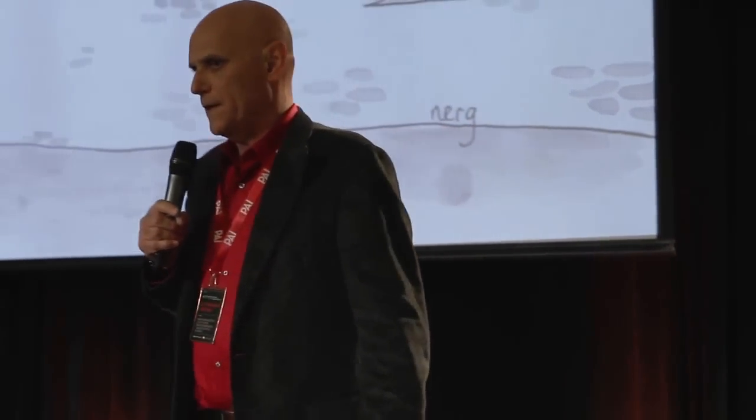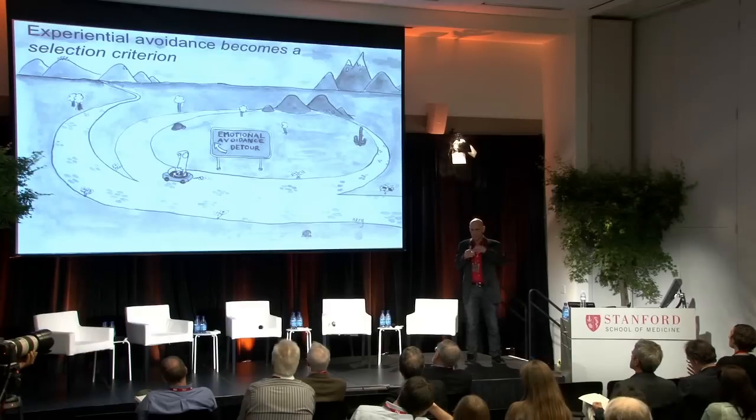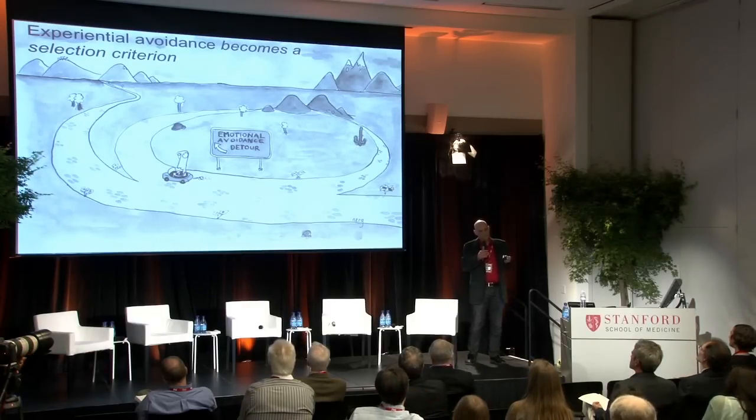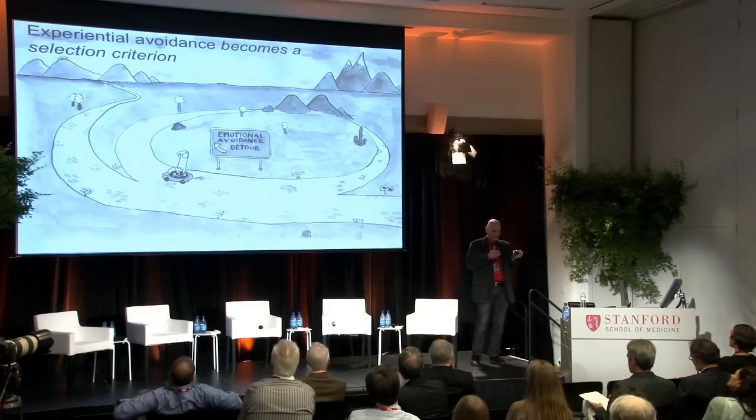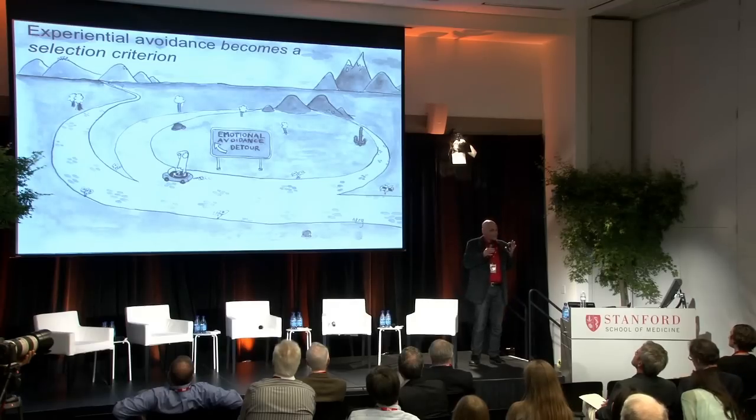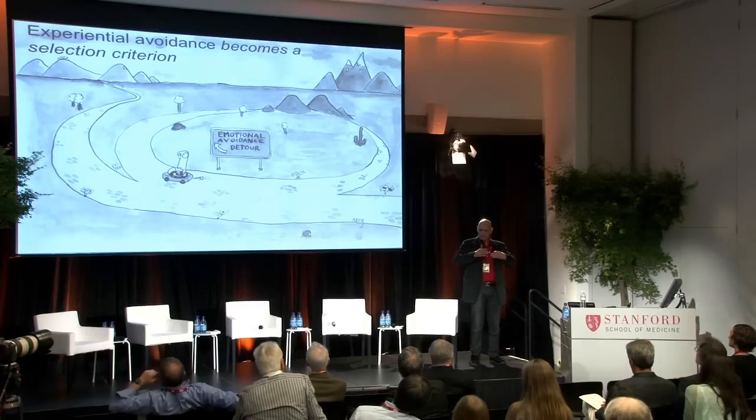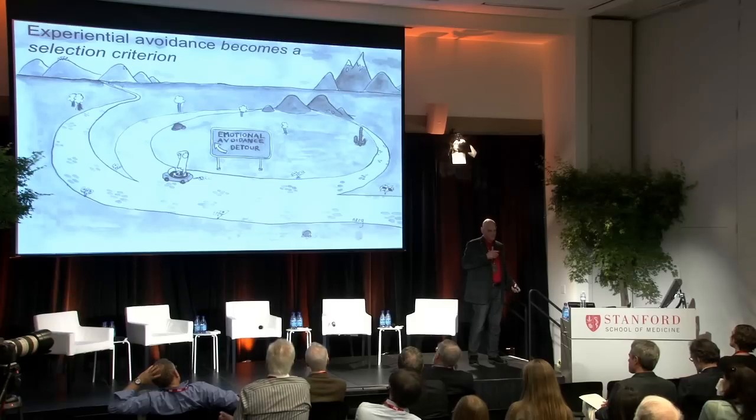Avoidance becomes a selection criterion in its own right. We want intimacy, but we don't want to feel fear, so we blow up the relationship — it might go somewhere and that would make us feel vulnerable. We can easily get in our own way of evolving towards what we really want if the alternative agenda of feel-good at all costs is adopted. Effective behavior often gives rise to unpleasant emotions, thoughts, memories, and bodily sensations. If you exercise and you're overweight, you're not going to initially feel good. One of the single biggest barriers why people don't exercise is people look at them, and they don't like thinking what they think when they see people look at them.